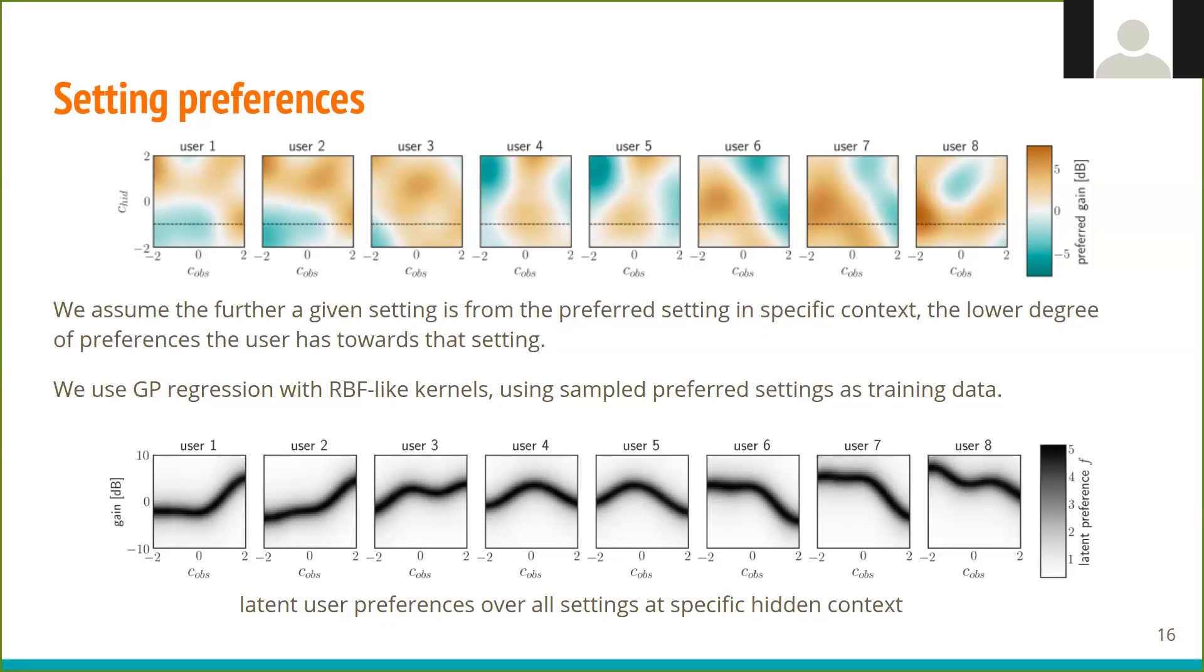As a result, we can assign some degree of preference to any setting within the full space of settings, as shown here for an example where the setting range is between 10 and minus 10.